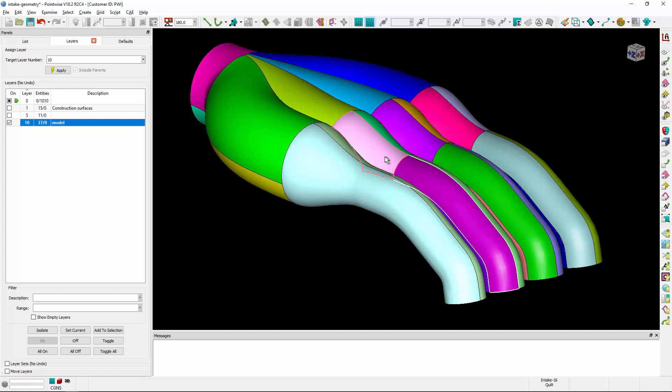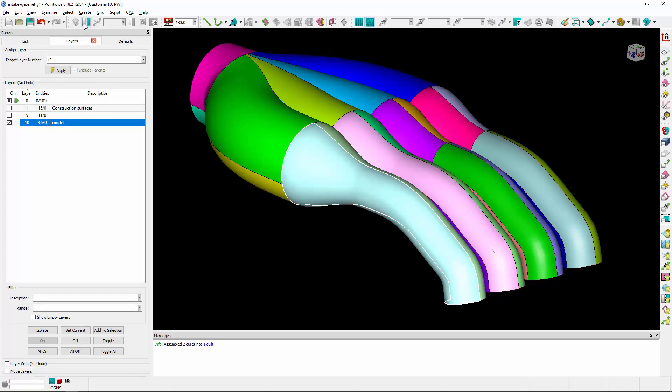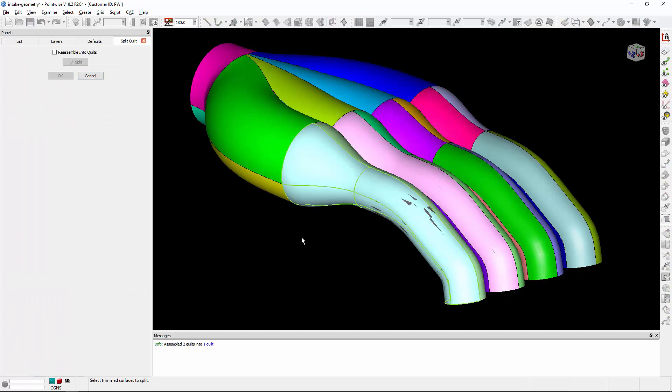But we can take quilts on the surface of this model and assemble them into larger quilts. We can also take quilts that we have assembled and we can split them back into individual quilts such that there would be one quilt per underlying trim surface in this model.